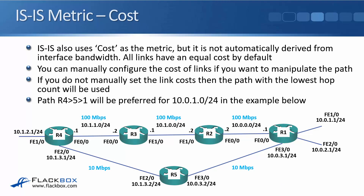ISIS also uses cost as the metric, but unlike OSPF, it is not automatically derived from interface bandwidth — all links have equal cost by default. So if you want to force a particular path based on bandwidth in ISIS, you have to manually configure that. If you don't manually set link costs in ISIS, the lowest hop count will be used, which in our example again means the bottom path via R4 to R5 to R1.